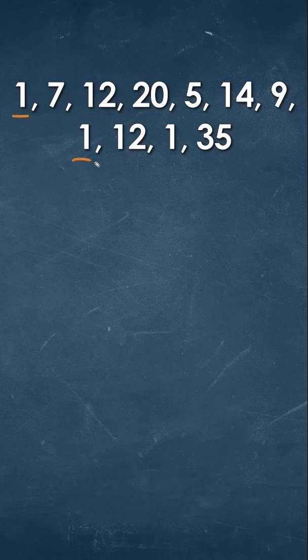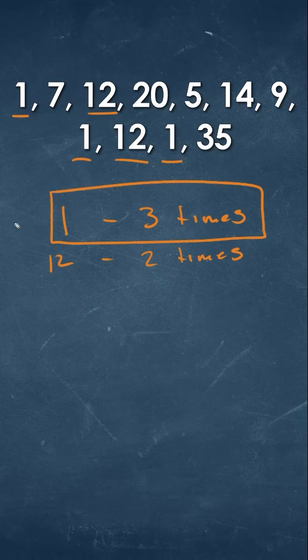If we look at this data set, you notice that we have the value of one coming in three times. You'll also notice that we have the value of twelve that comes in two times. Looking at it in terms of what we consider as the mode, it's the value that happens the most. So our mode would actually just be equal to one because it happens the most times.